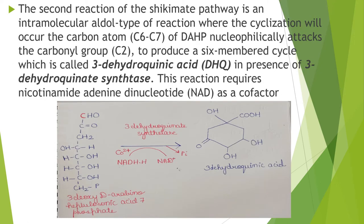The second reaction of the shikimate pathway is an intramolecular aldol-type reaction where cyclization occurs. The carbon atoms C6-C7 of DAHP nucleophilically attack the carbonyl group at C2 to produce a six-membered ring called dehydroquinic acid, in the presence of 3-dehydroquinate synthetase.